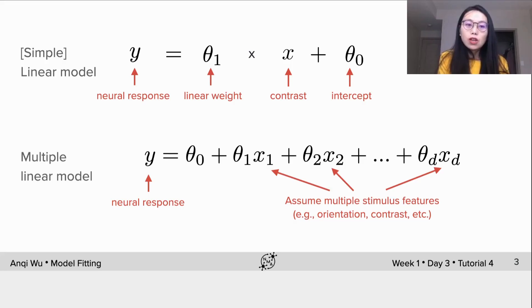There are d features in this model, and theta1 all the way to thetad are the linear weights in front of these features, and theta0 is still the intercept. Each thetad gives you the impact of xd onto the neural response.